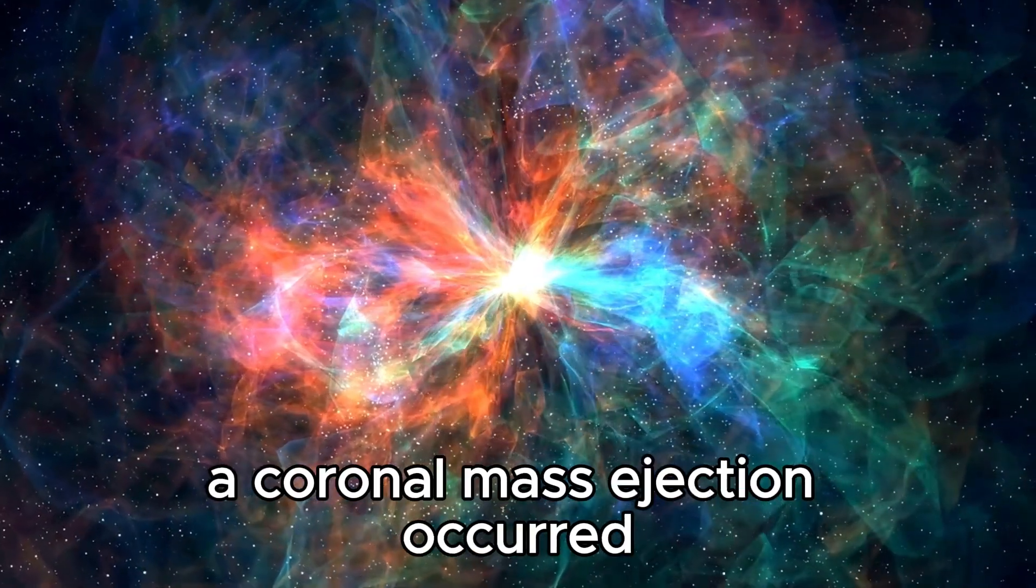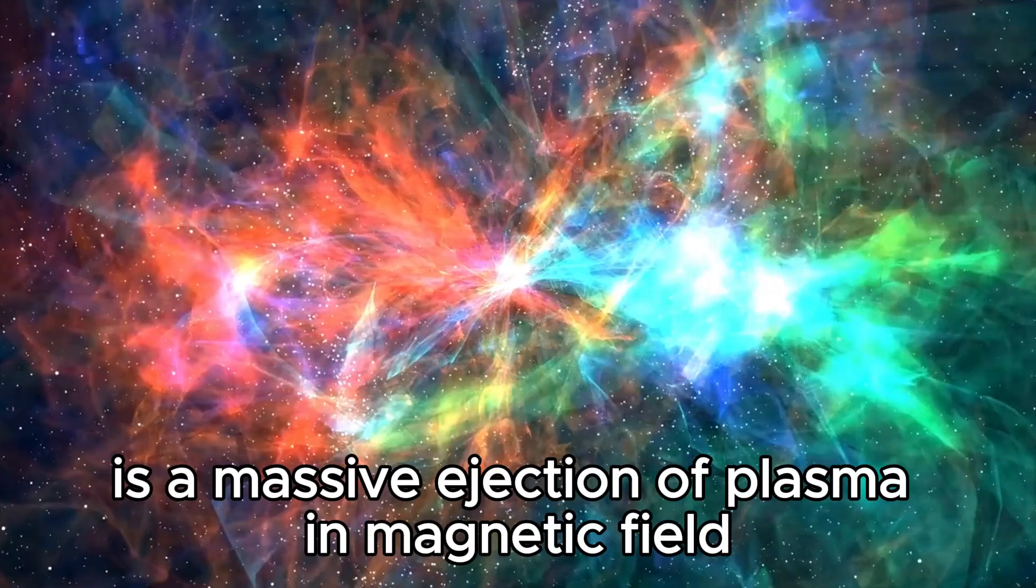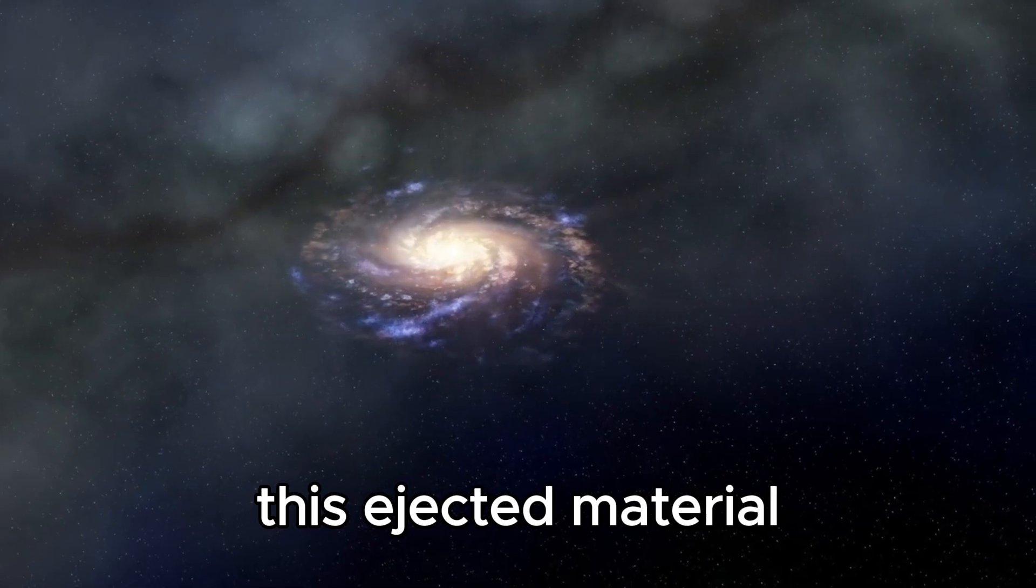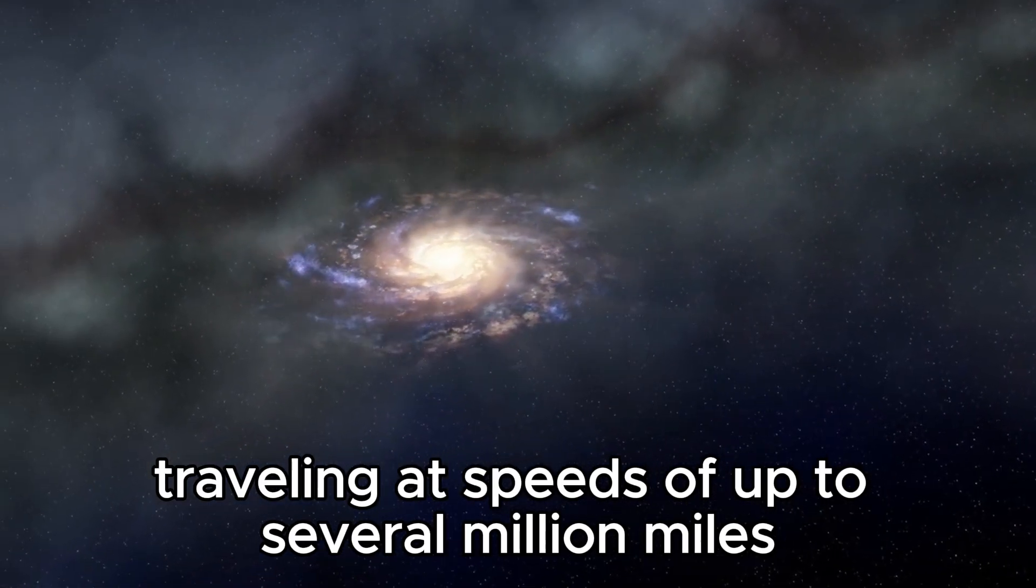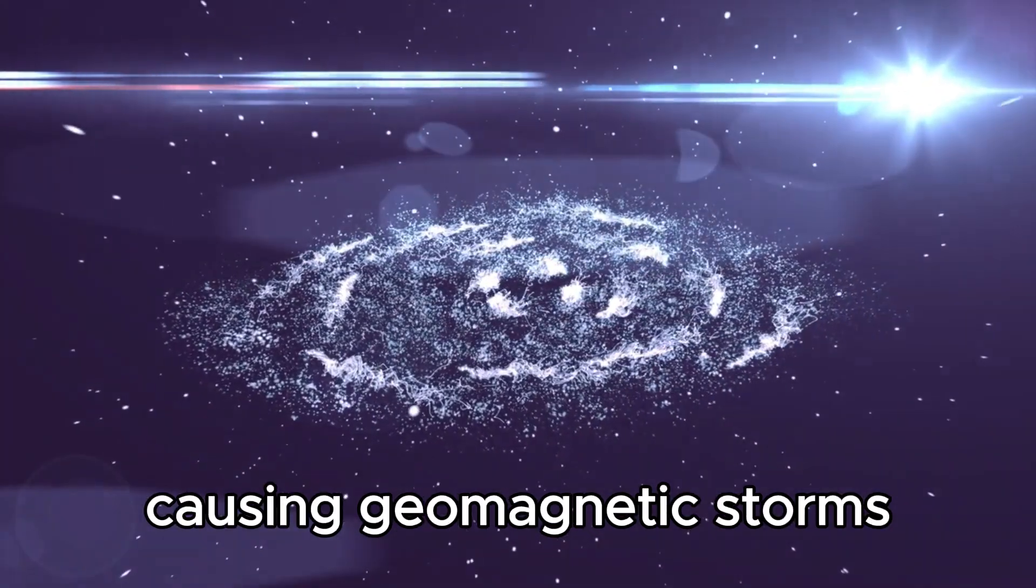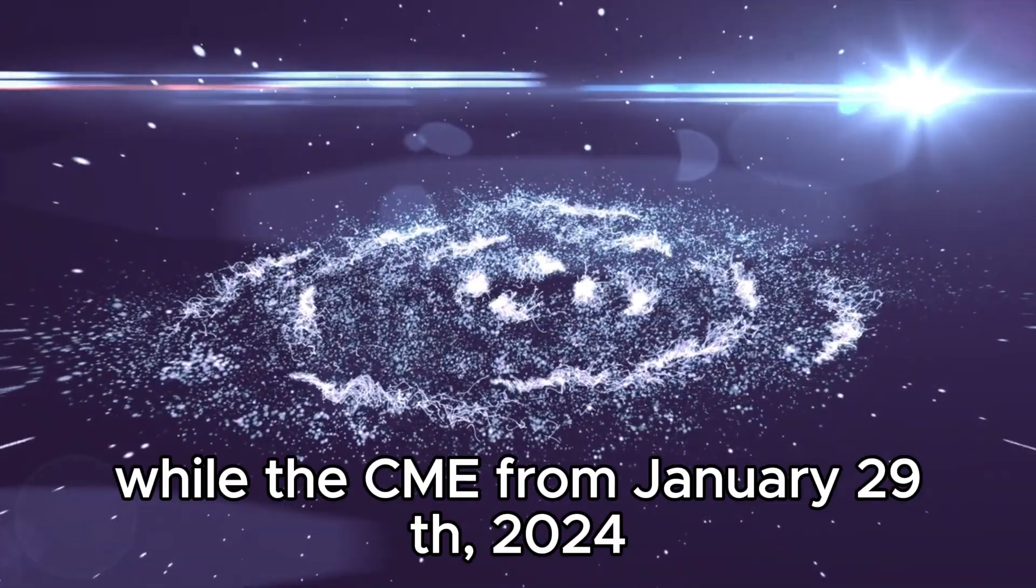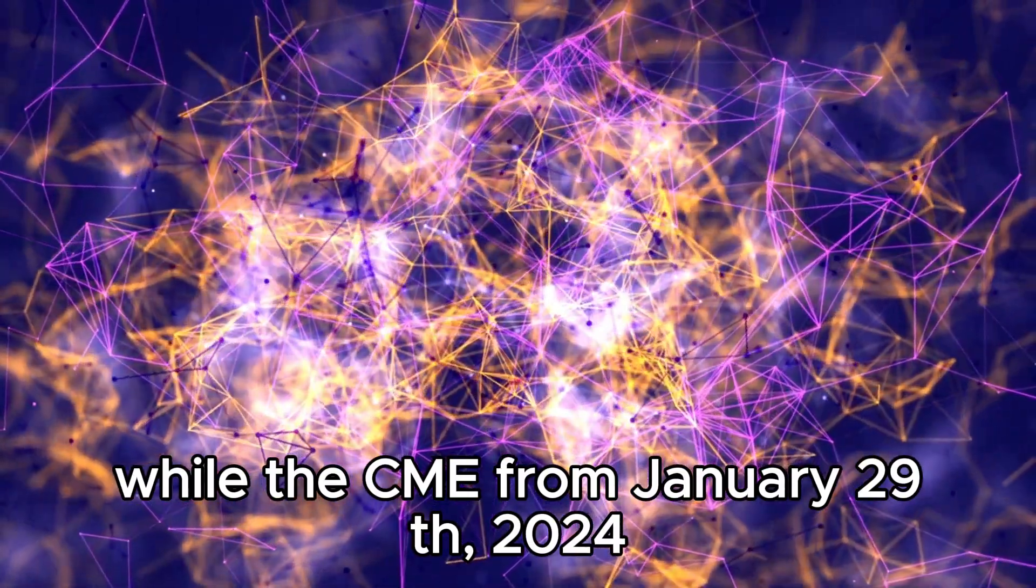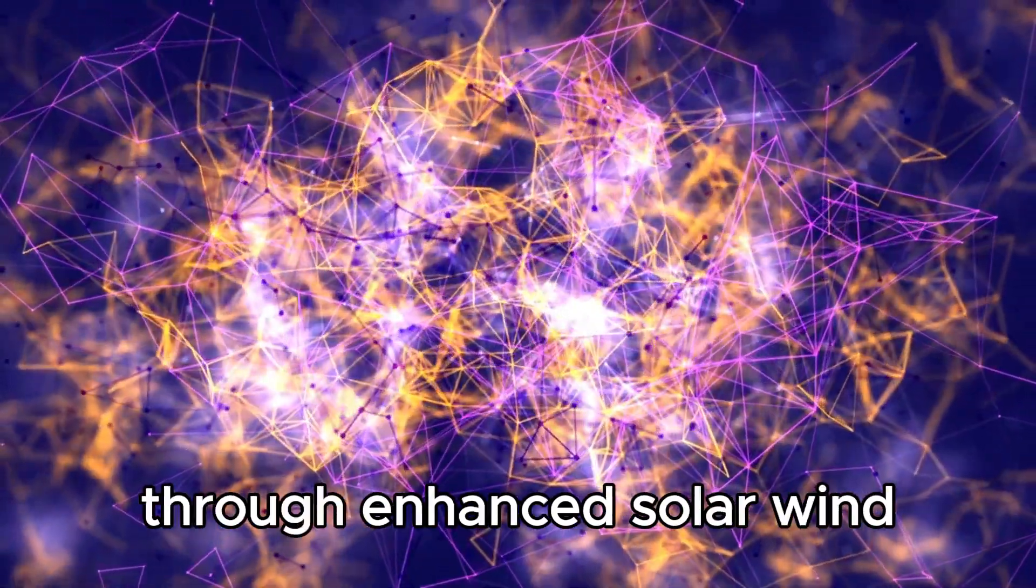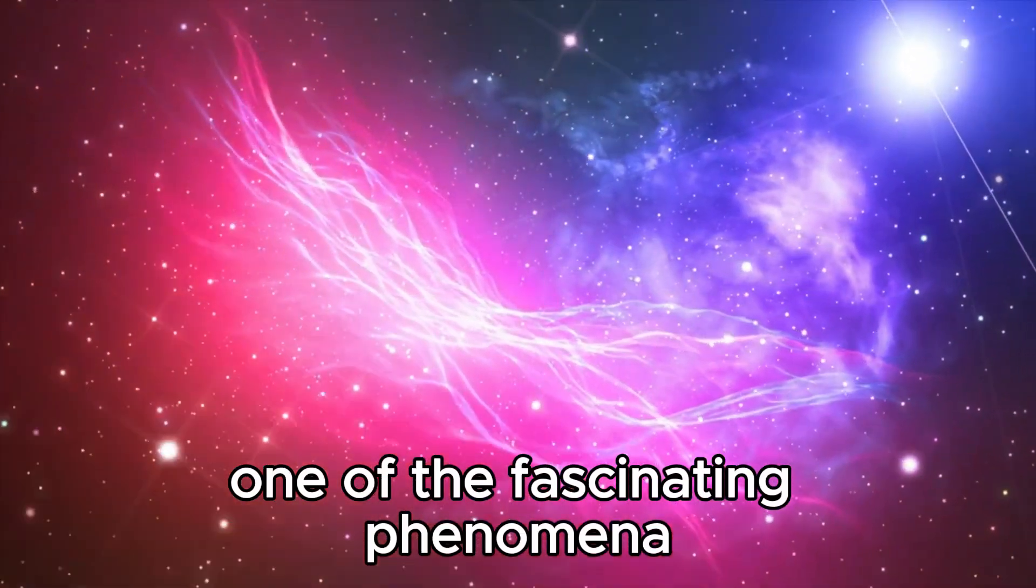Following the solar flare, a coronal mass ejection occurred. A CME is a massive ejection of plasma and magnetic field from the sun's corona into space. This ejected material, traveling at speeds of up to several million miles per hour, can interact with Earth's magnetosphere, causing geomagnetic storms and triggering auroras at high latitudes. While the CME from January 29, 2024 was not directed towards Earth, its effects were observed indirectly through enhanced solar wind and disturbances in the magnetosphere.